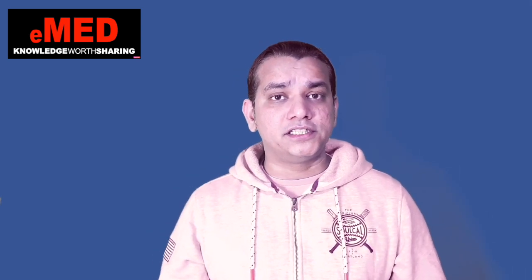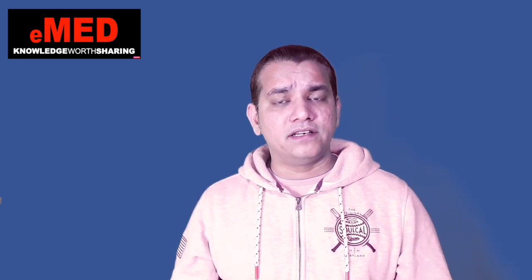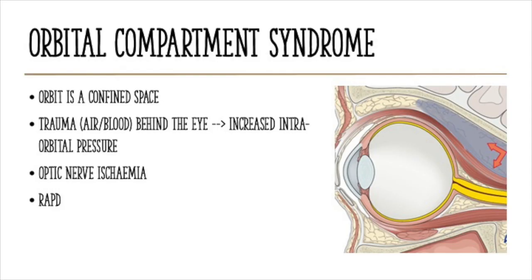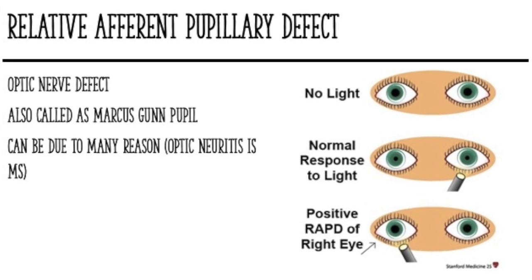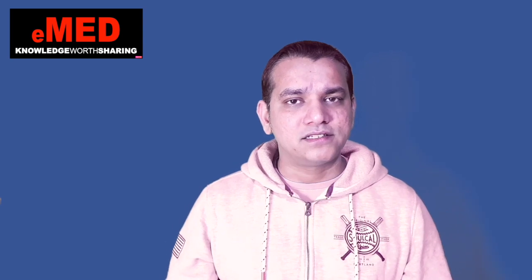Let's look at another pathology — the orbit is a closed compartment, and when something builds up within it, it leads to orbital compartment syndrome. Blood or air behind the eye compresses the optic nerve, giving rise to a relative afferent pupillary defect. To diagnose this: shining light in the unaffected eye causes both pupils to dilate via the consensual reflex, but shining light in the affected eye produces no response in that pupil. This is a relative afferent pupillary defect, also known as a Marcus Gunn pupil.